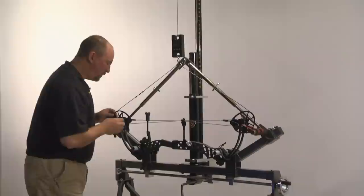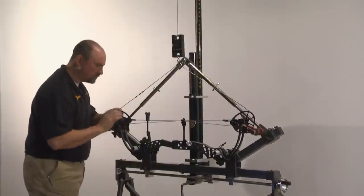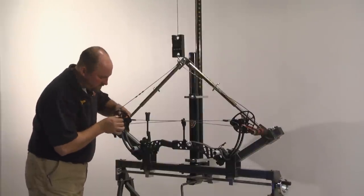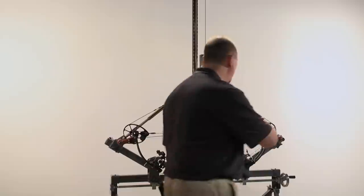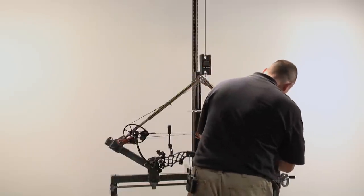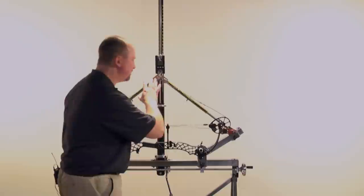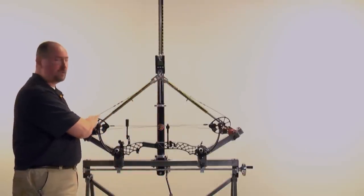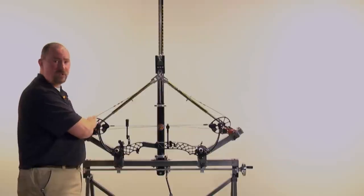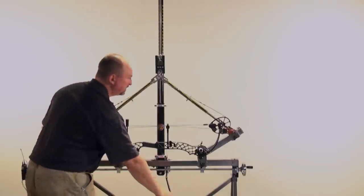Before we go back up, we should point out that you want to double check, make sure the string and cables are both routed correctly and haven't come out of any of the tracks. Make sure that's fully in the track. If you do draw the bow with the string or cables out of the track, you're certainly going to damage the string and probably damage the cam as well. So everything is in the track.